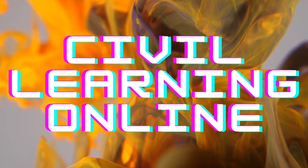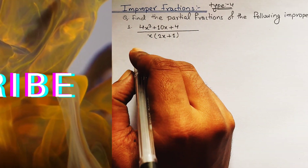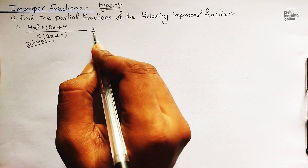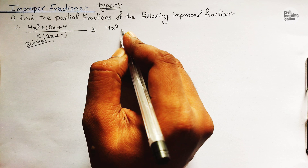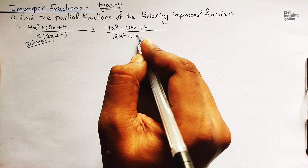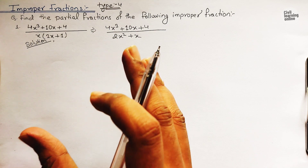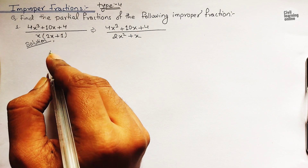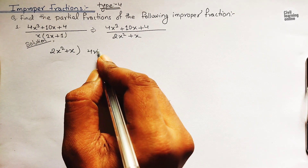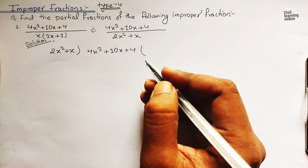Let's move to the solution. We have 4x³ + 10x + 4 upon 2x² + x. Whenever we come to face an improper fraction, we have to do division — we have to divide the numerator by the denominator. So we will divide 2x² + x into 4x³ + 10x + 4 using algebraic long division.